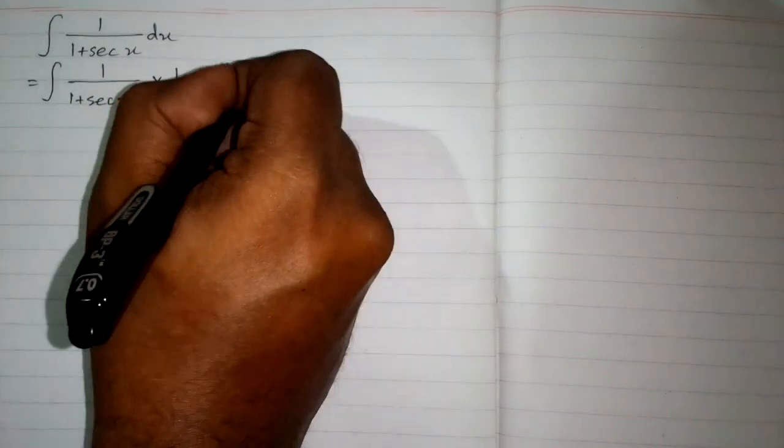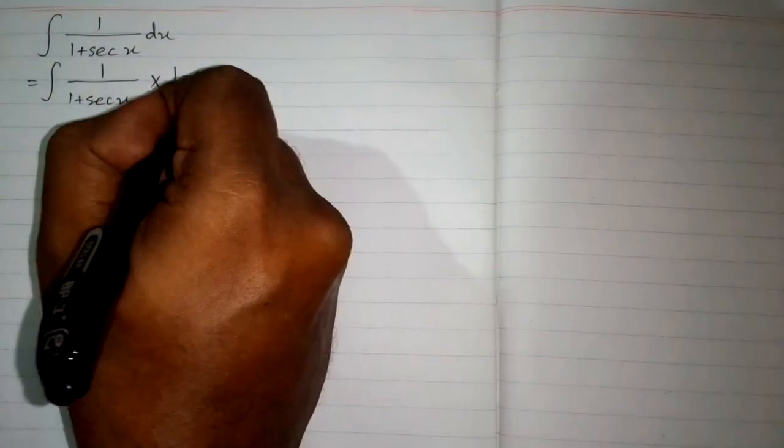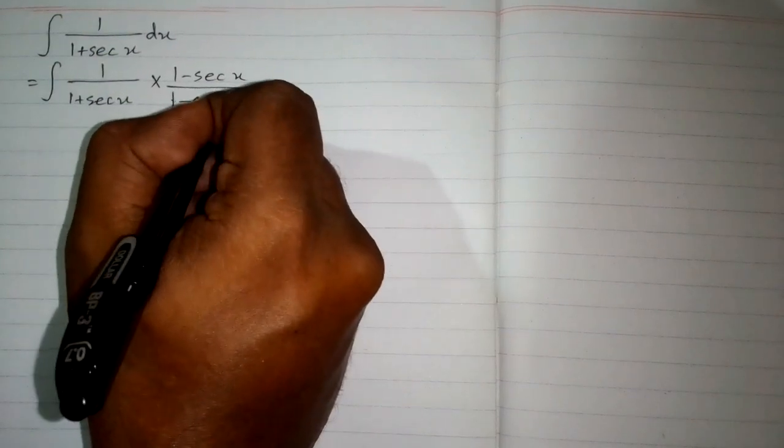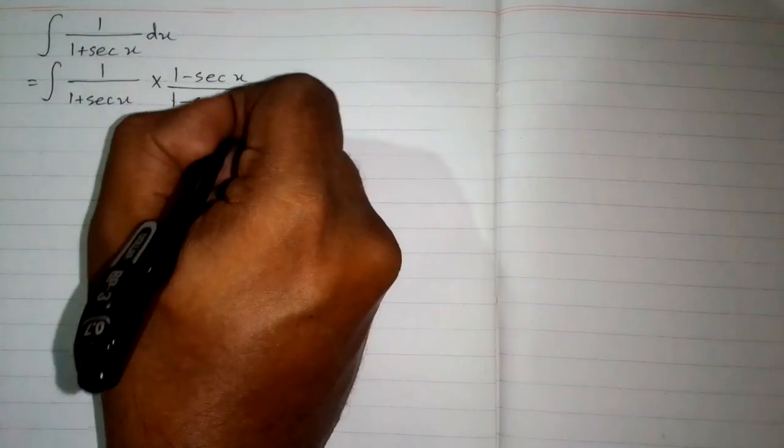In this video we will find the integral of 1 upon 1 plus sec x. First of all, we will multiply this fraction by 1 minus sec x upon 1 minus sec x, so we have 1 multiplied by 1 minus sec x, which is 1 minus sec x in the numerator.